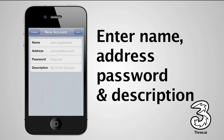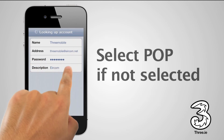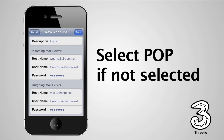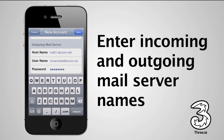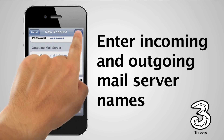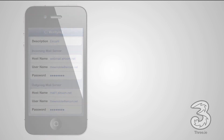Enter your name, your address, your password, and a description. Then tap Next. Select POP if it's not selected. Scroll to Incoming Mail Server and enter the host name. Under Outgoing Mail Server, enter the host name as previously given to you by your email service provider. Tap Save. The iPhone will now verify your email account.